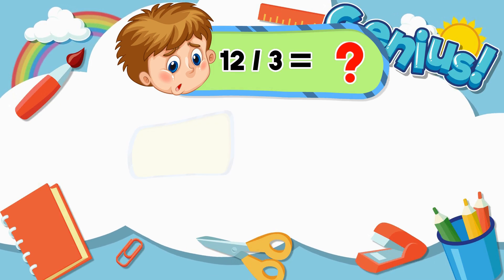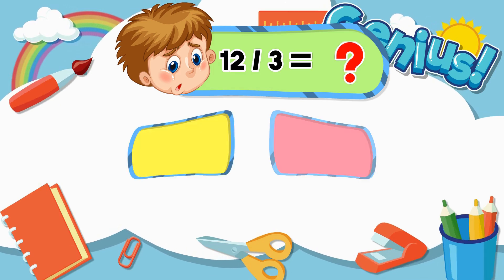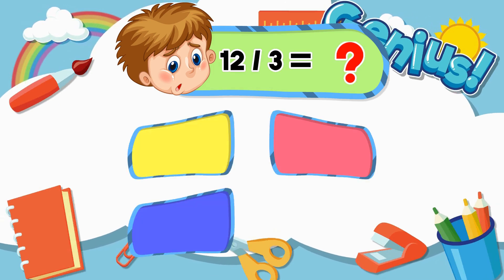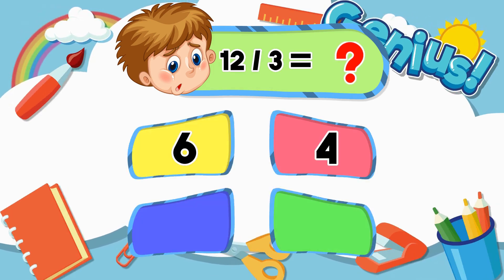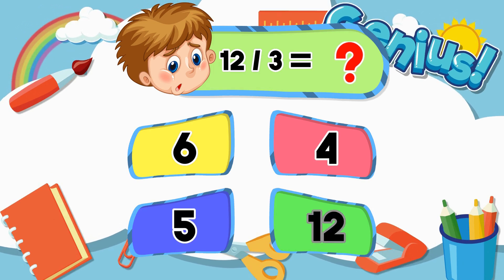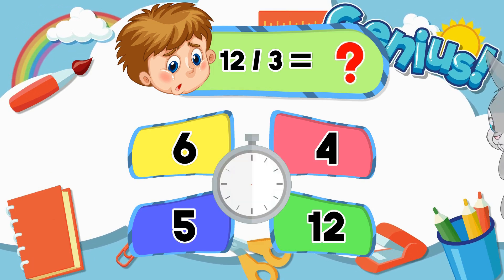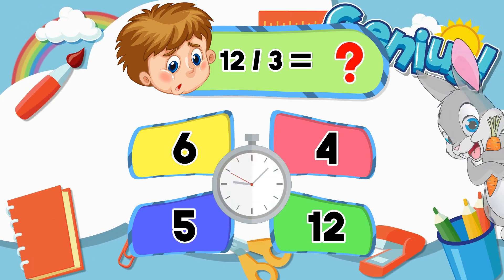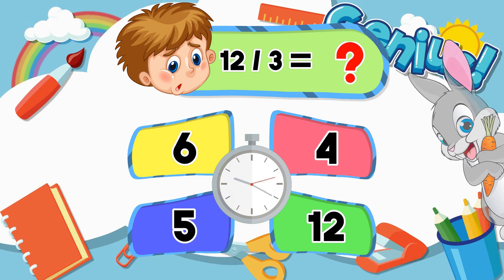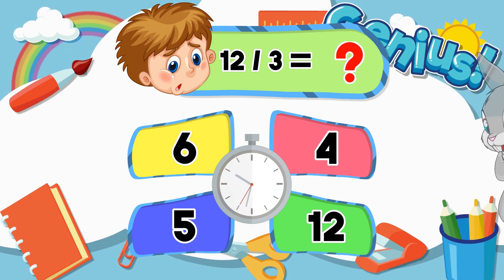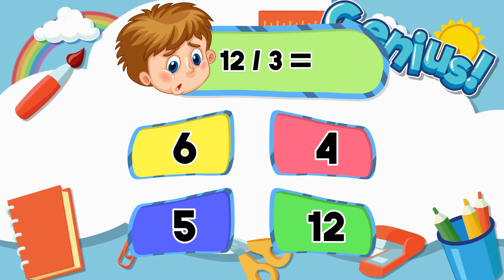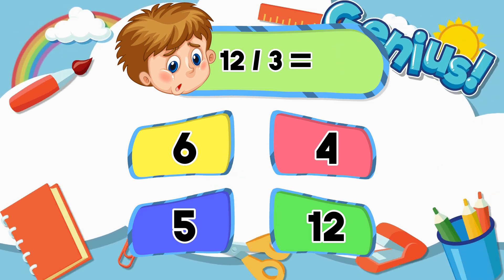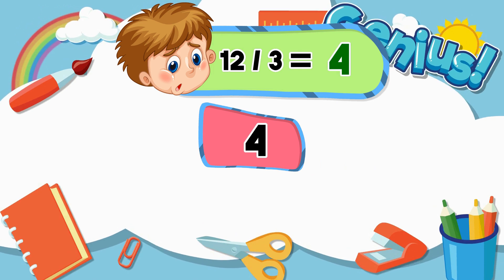What is 12 divided by 3? Options: 6, 4, 5, 12. The answer is 4.